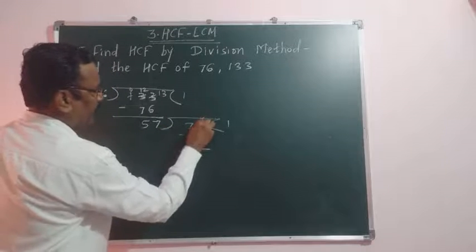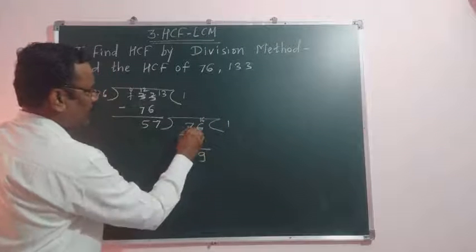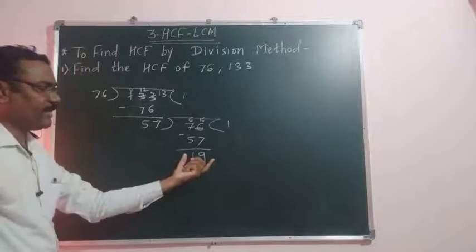Here we get 16. Now, 16 minus 7 is 9. Here we get 6 over 19. Remainder is 19.